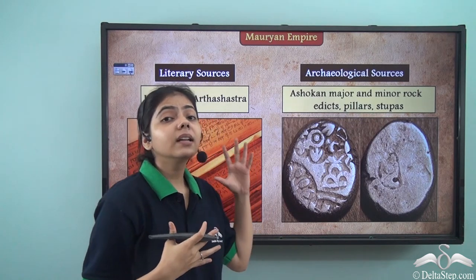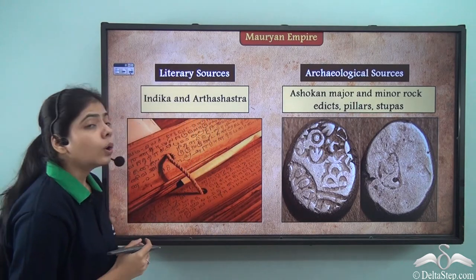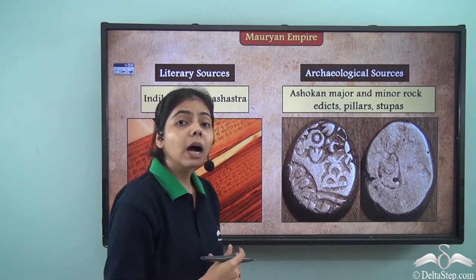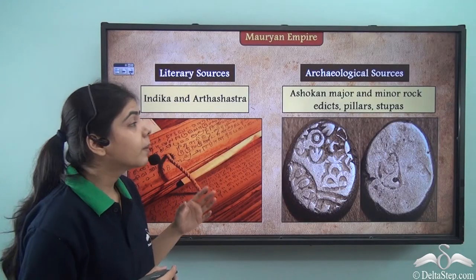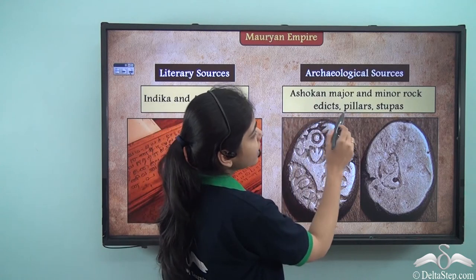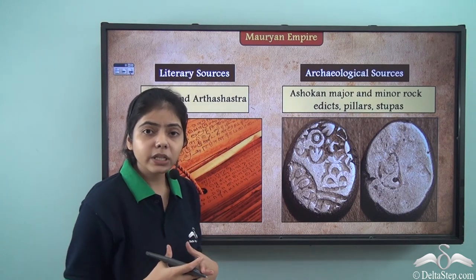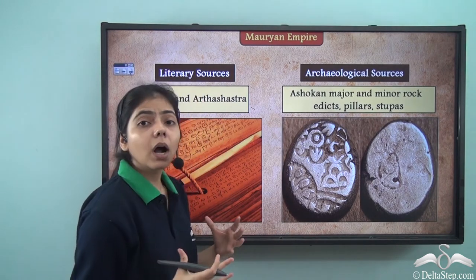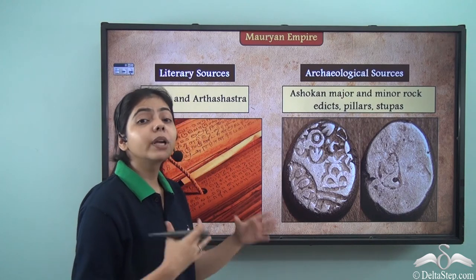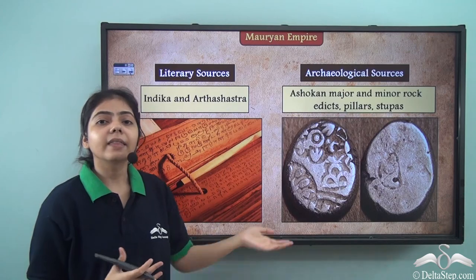So now we already know what the literary sources are and what the archaeological sources are and how they help us solve the puzzle of the past. We saw how the Indica and the Arthashastra explained governance, society, and administration. We also saw how messages engraved on rocks and pillars spread the moral law of Dhamma, how illiterate masses learned about these messages through officials who read them aloud, and how carvings on Stupas served as pictorial representations for Buddhist monks who could not read.